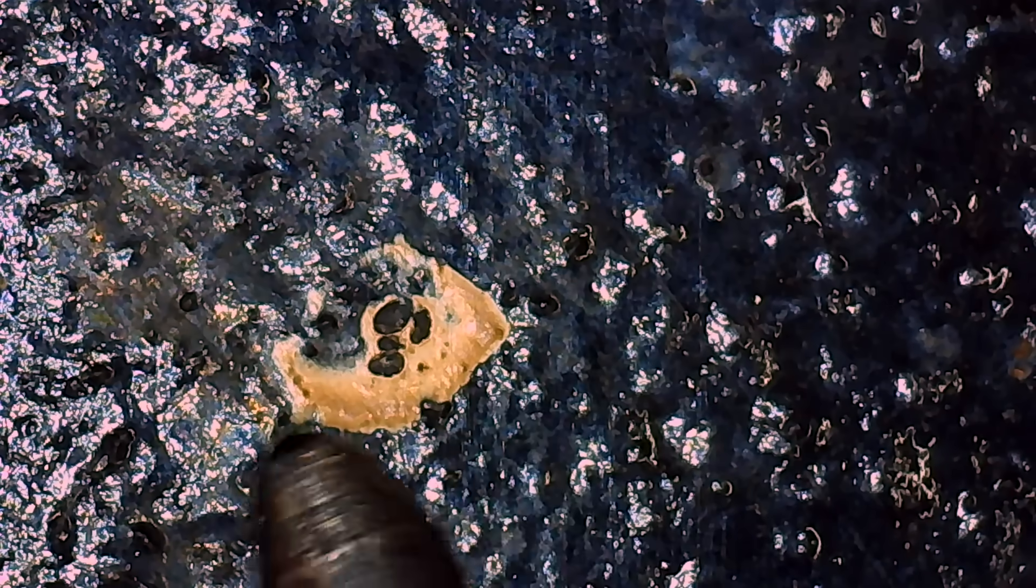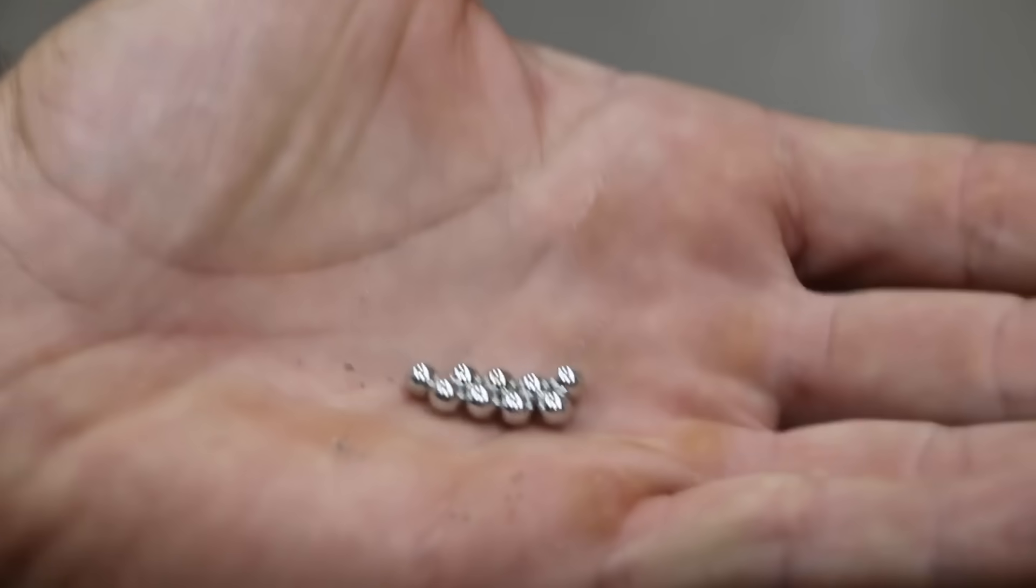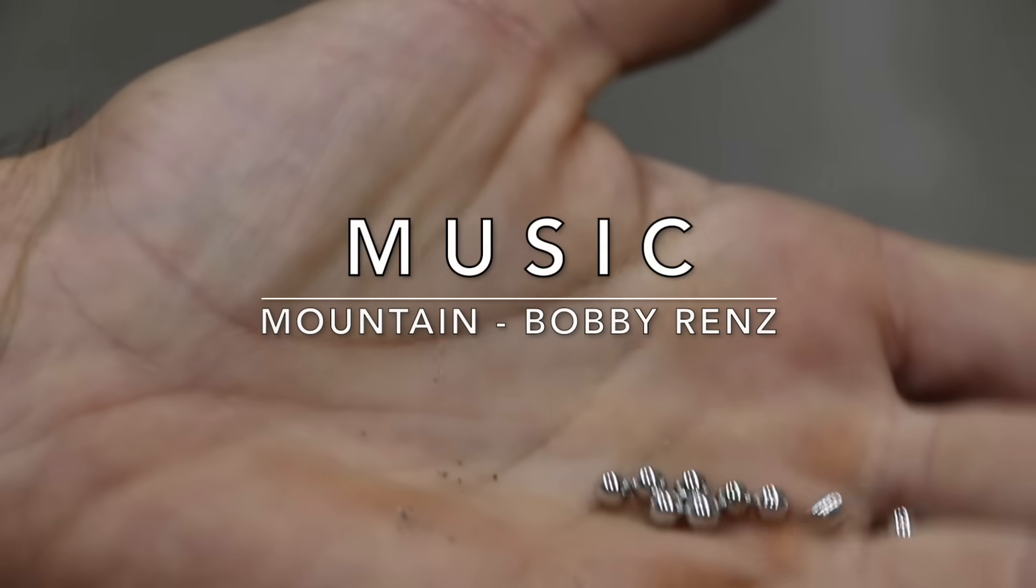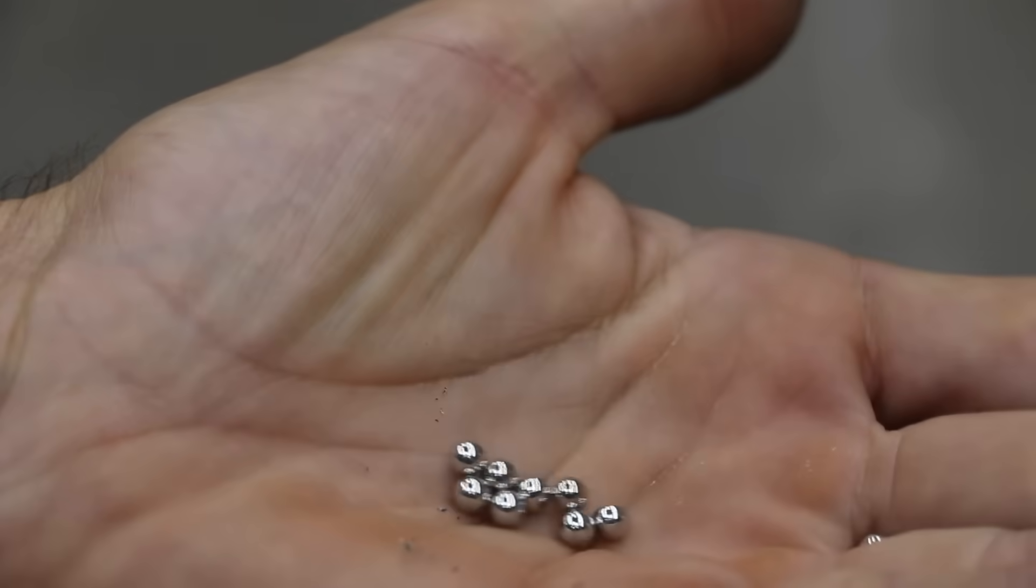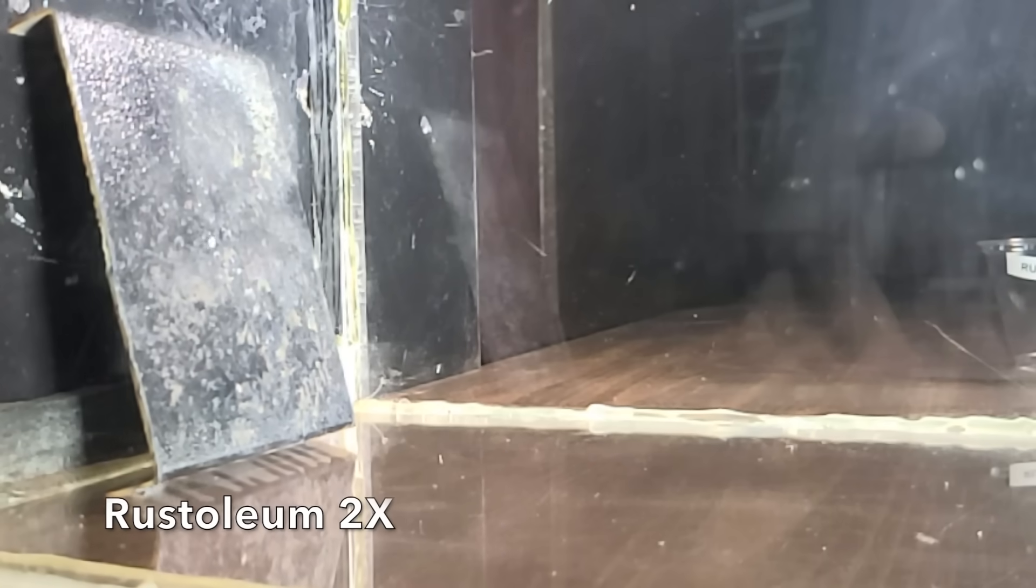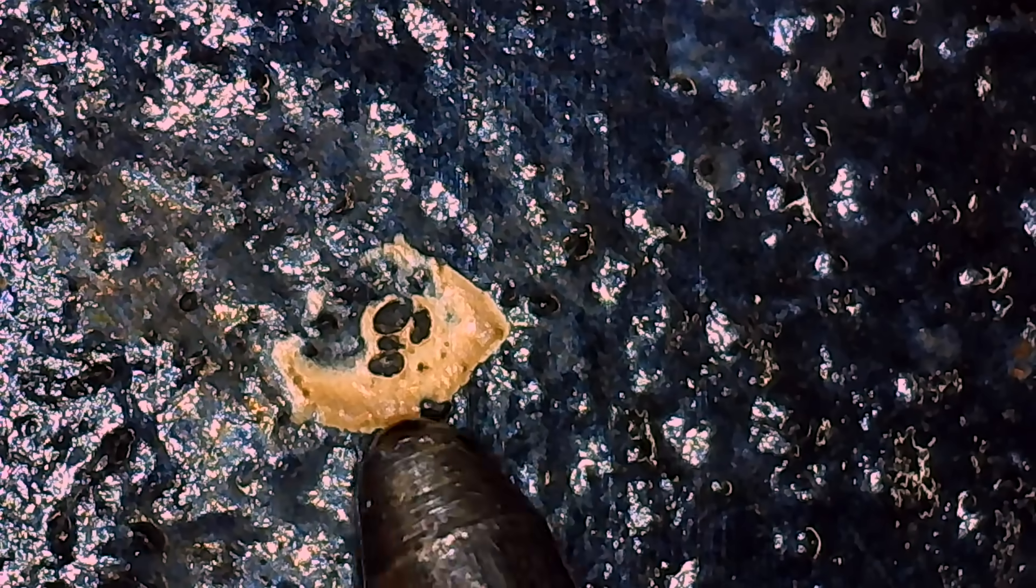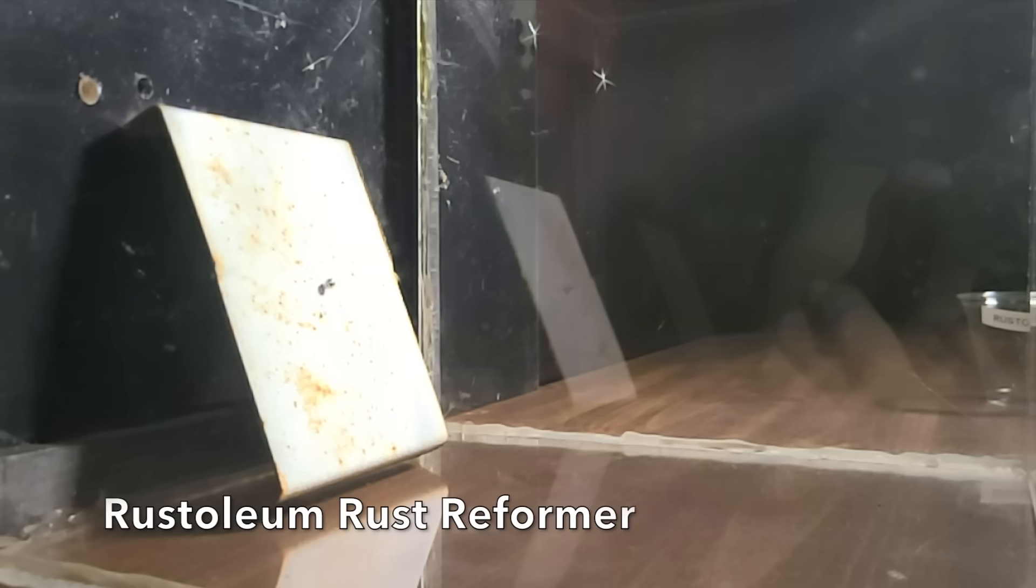Let's see which coating provides the best protection against chipping in the next test using a .177 caliber steel ball that'll be impacting the metal at around 200 miles per hour. At an ambient temperature of 75 degrees Fahrenheit or 24 degrees Celsius, the Rust-Oleum 2X experienced a 2.84 millimeter chip. The Rust-Oleum Rust Reformer chip was quite a bit larger at 4.18 millimeters compared to only 2.84 millimeters for the Rust-Oleum 2X.